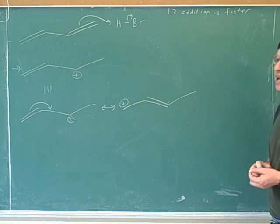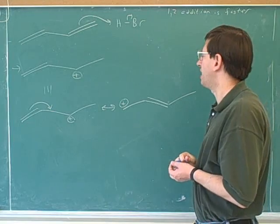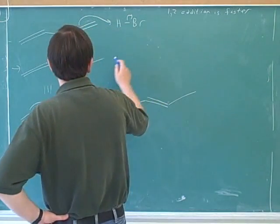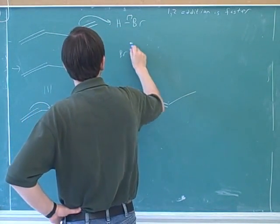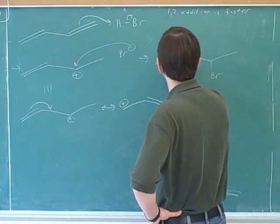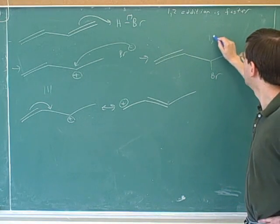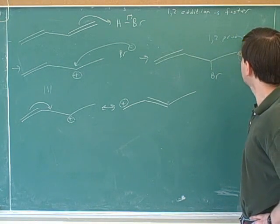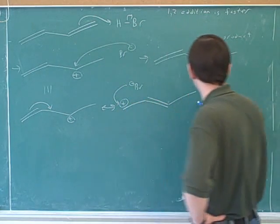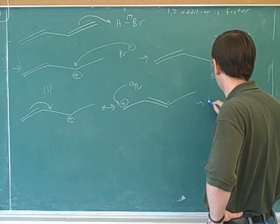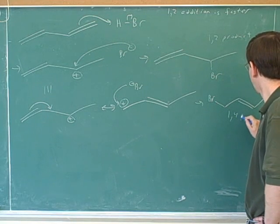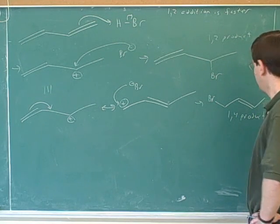Sadly, there's another complication that can mess things up here. So we have the 1,2-addition is faster because of this idea of the more stabilized carbocation resonant structure. Now let's say that the bromine actually attacks over here, that would give us this product, this is the 1,2 product. Whereas if the bromine attacks here, that would give us this product, the 1,4 product.